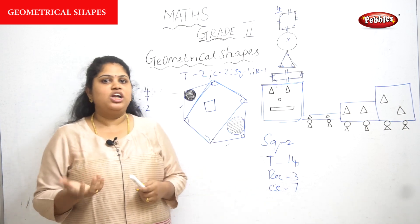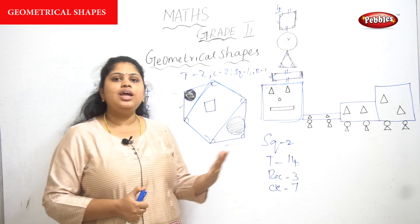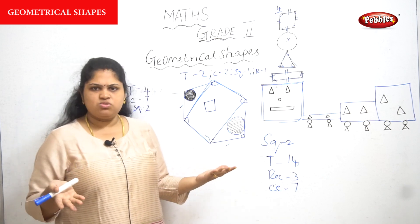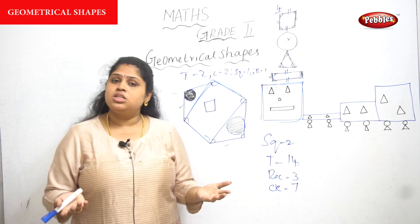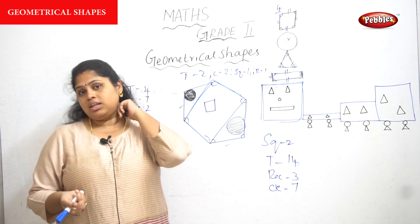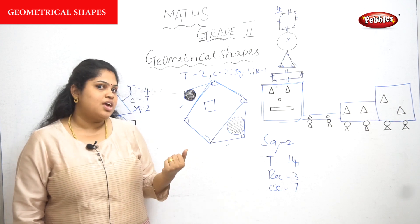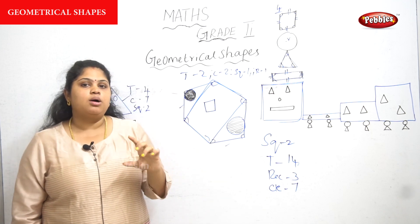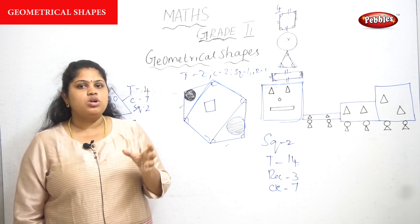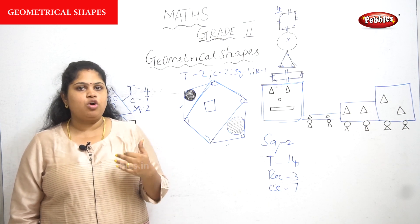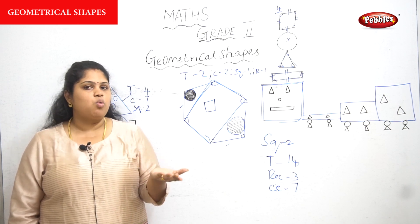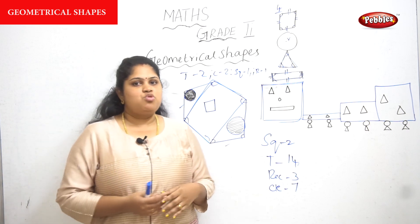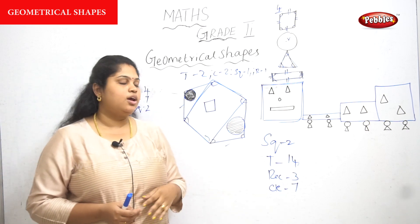How many circles? One, two, three, four, five, six, seven — seven circles. Whatever we draw, without shapes we cannot make any art. Shapes are not only related to mathematics — they are everywhere. If you draw a tree, roses, or animals, you can find shapes everywhere. The only thing that doesn't have a shape is water. Water has no fixed shape, but if you put water in a tumbler, it takes the tumbler's shape; in a bowl, it takes the bowl's shape.